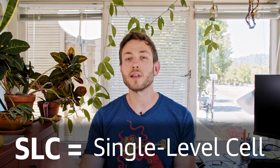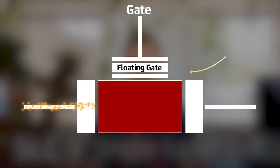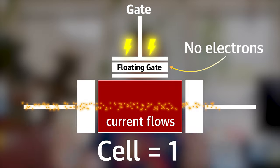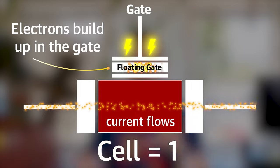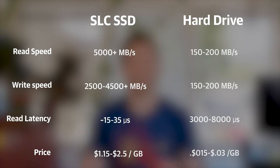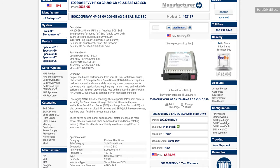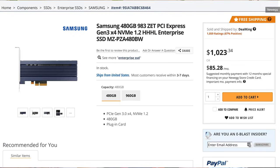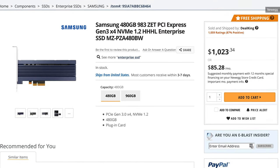This is how a single level cell, or SLC, flash drive works. Whether or not there are electrons trapped in the transistor determines whether or not it gets read as a one or a zero. SLC drives have a huge advantage over traditional hard drives when it comes to speed, but they are expensive. It takes literally trillions of transistors to store trillions of bits of data. An SLC drive like Samsung's Z drive can cost about $2 a gigabyte, and even lower-end SLC drives are more like $1.15 a gigabyte — still pretty expensive.